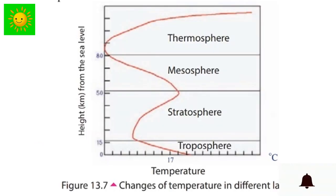This figure shows you some changes of temperature in different layers according to the height from the sea level. Temperature decreases with the increasing height up to the troposphere. This is how it happens.